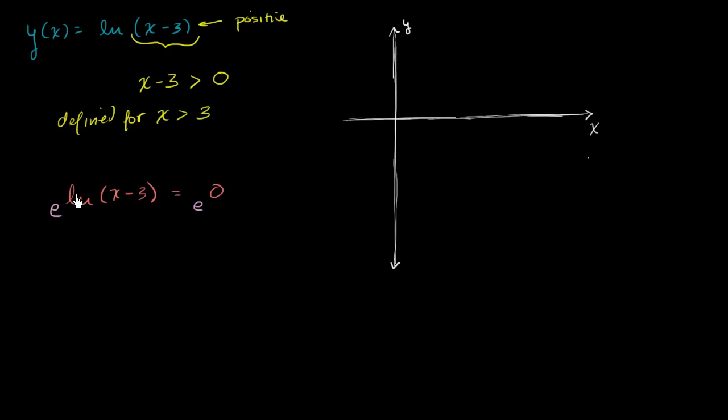And of course, if you raise e to whatever exponent you need to get you to x minus 3, that's just going to get you to x minus 3. And if you raise e to the 0, well, anything to the 0th power, except possibly 0, e to the 0 is equal to 1.